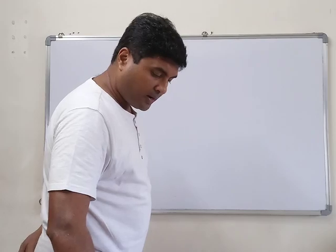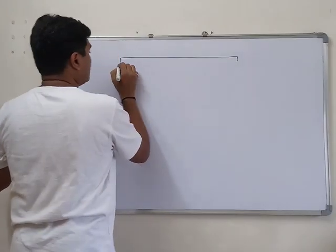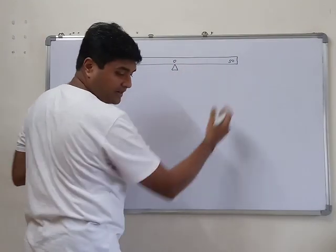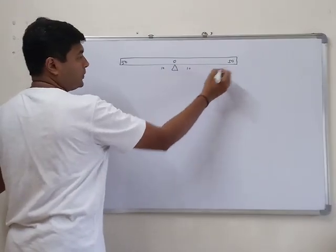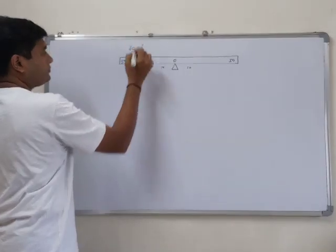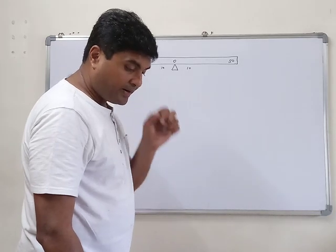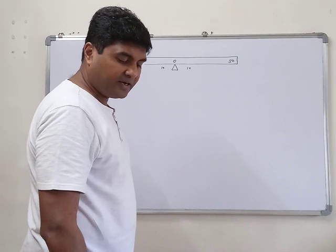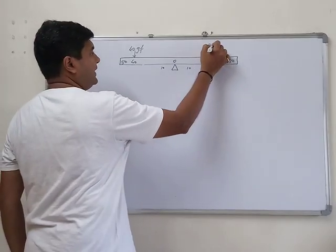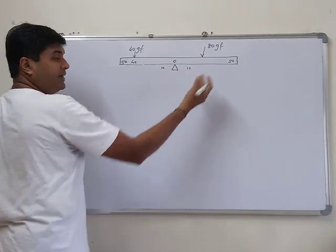Question 10: the diagram shows a uniform bar. Markings go from −30 to +30 on either side of zero, and at the 40 cm mark there is a weight of 40 gf. The bar is supported at 0. A weight of 40 gf is placed 40 centimeters to the left of zero. Find where to place 80 gf to balance the bar.